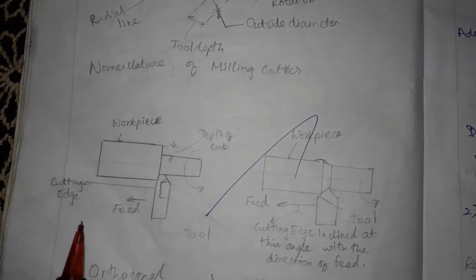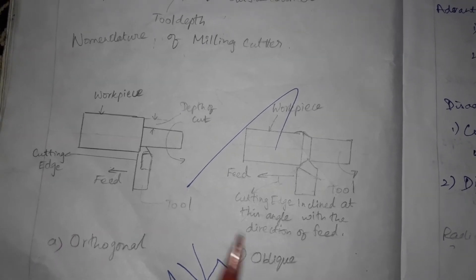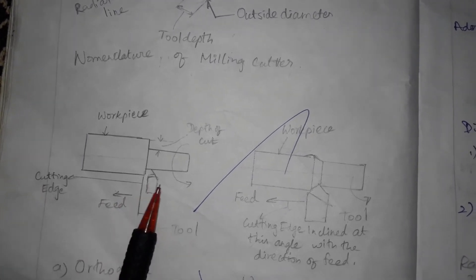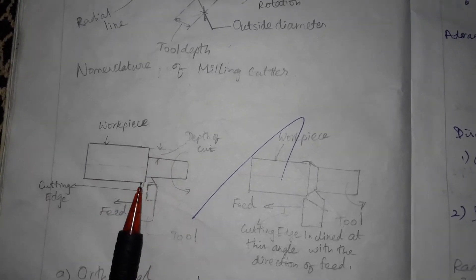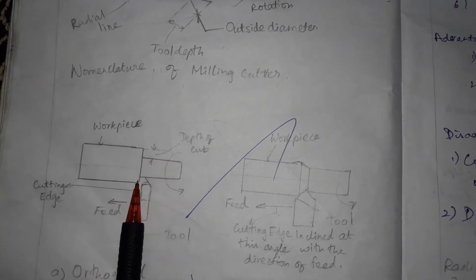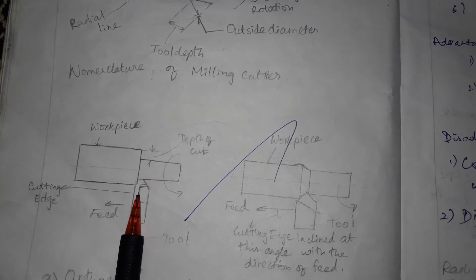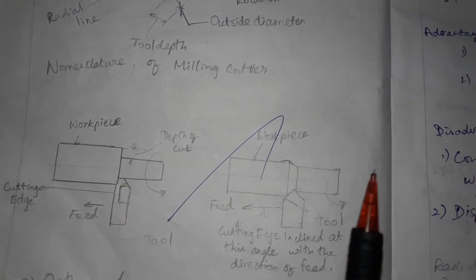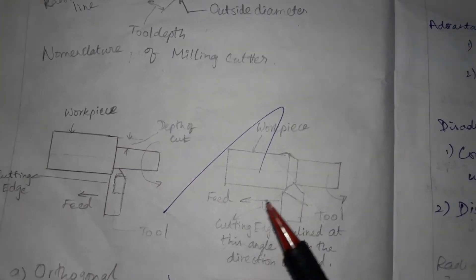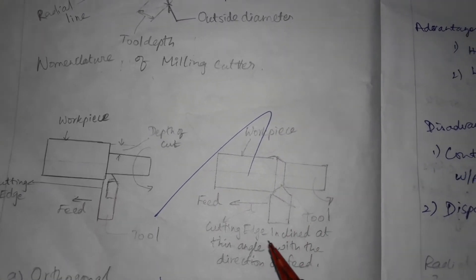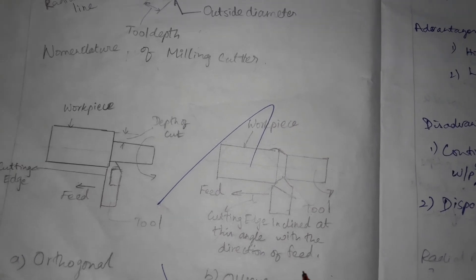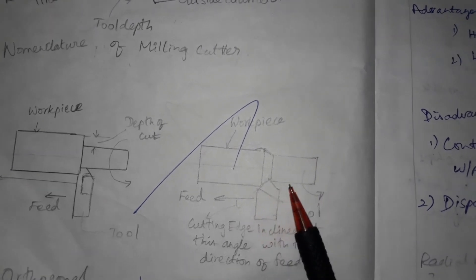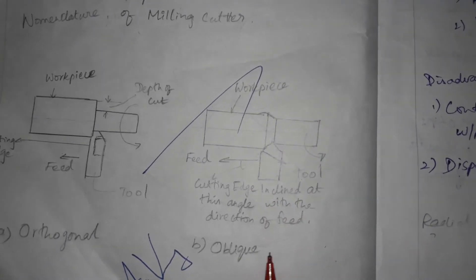Now the types of cutting: orthogonal cutting and oblique cutting. In orthogonal cutting, the cutting tool is at 90 degrees to the workpiece while the workpiece is rotating. The cutting edge is shown here; feed is given to the left side and the depth of cut is applied. In oblique cutting, the cutting edge is inclined at a certain angle with the direction of feed — the cutter is at a certain angle while cutting. The inclined portion of the teeth represents oblique cutting.